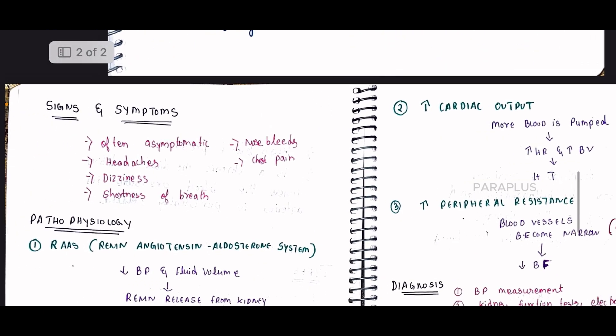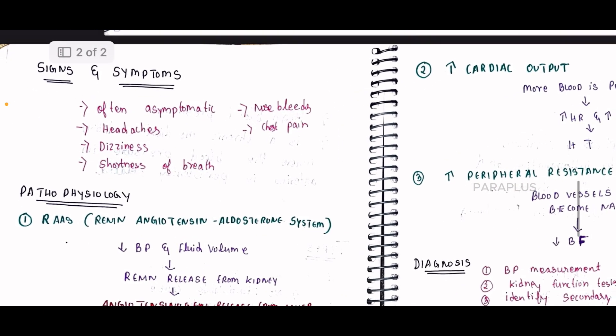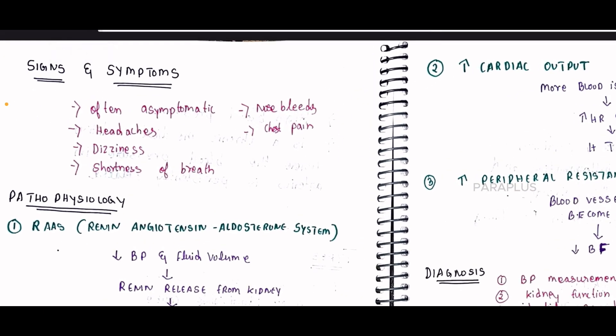Now we will talk about the signs and symptoms. First of all, hypertension is often asymptomatic — in the starting stage it is a chronic disease and we may not know any symptoms. The symptoms include headache, dizziness, shortness of breath, nosebleeding, and chest pain.